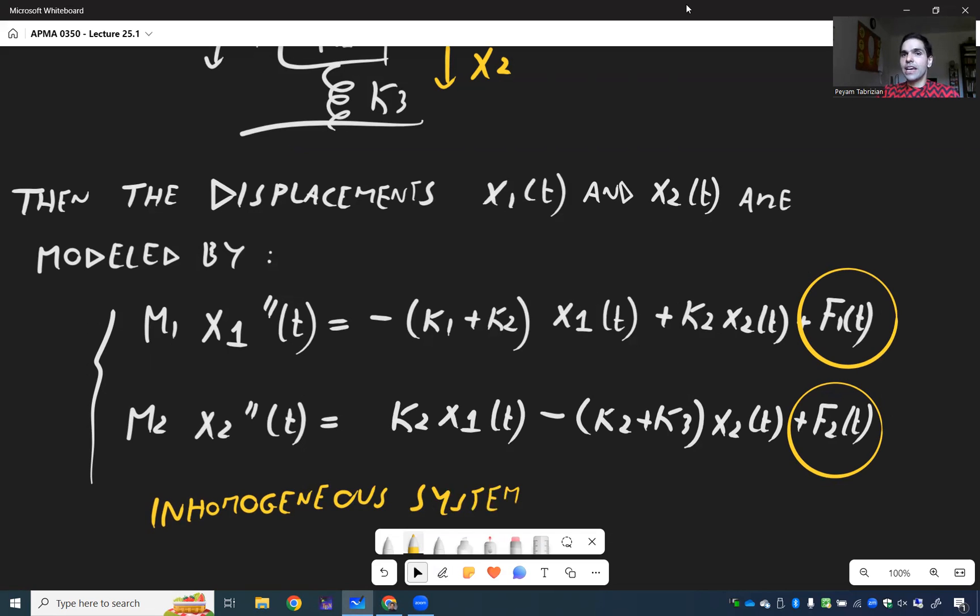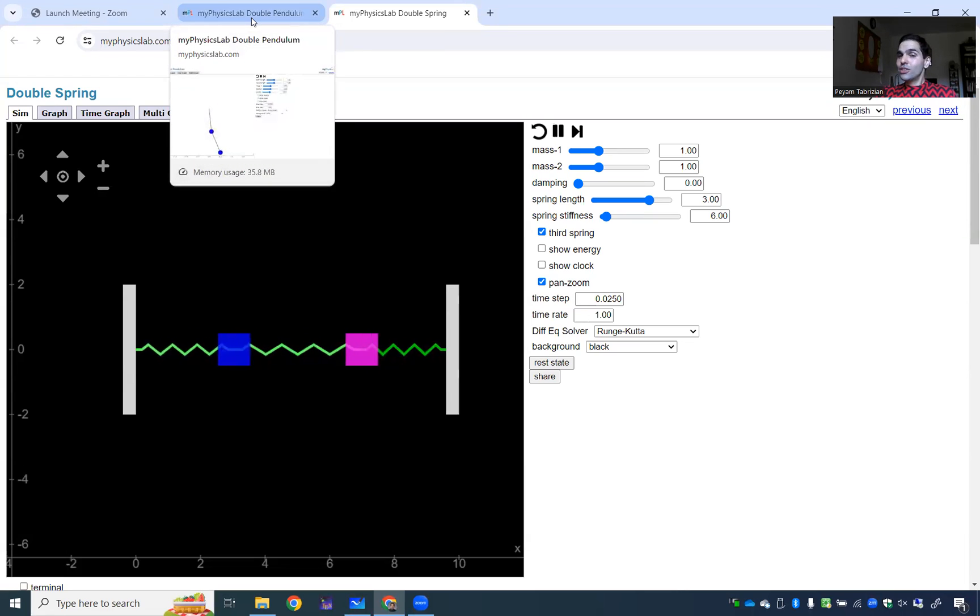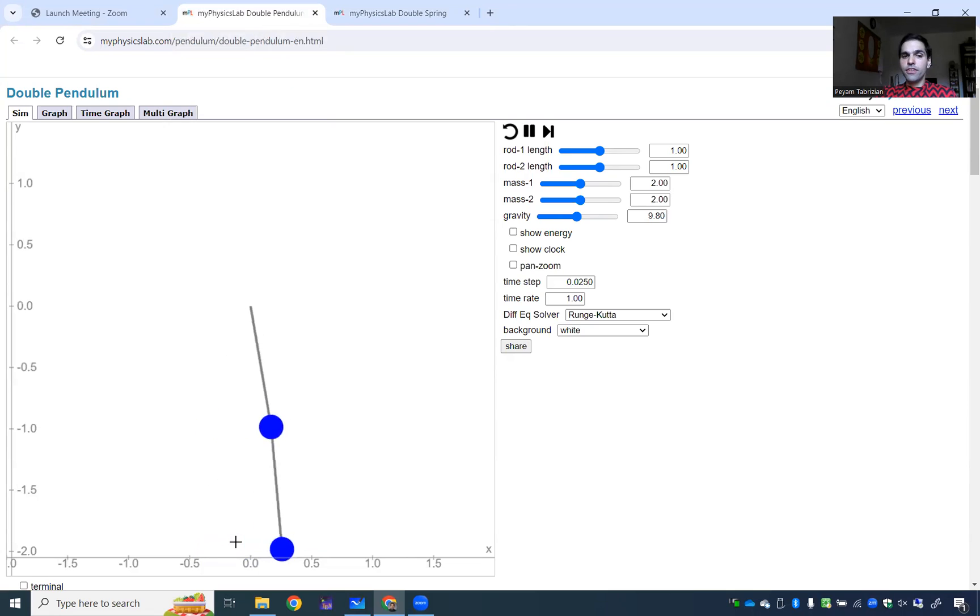And now in fact let me show you two quick demos. So the first thing I wanted to show you is those two masses on the three springs, here it's a bit horizontal but same thing, where now you can see them interacting with each other. This is modeled by this system of differential equations. Another thing I want to show you is we talked at the beginning of the course about the single pendulum and it turns out there's a double pendulum version of this where you have two weights on a pendulum that just swing like crazy like that. And in fact interestingly enough this is one of the first examples of a chaotic system so it turns out they behave very chaotically here.